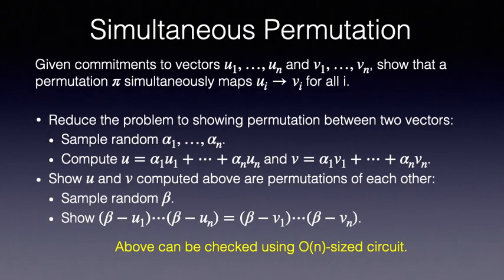Let us state the simultaneous permutation problem. Given the commitments to vectors u1 to um and v1 to vm, we want to show that there is a permutation pi that maps ui to vi for all i. We will accomplish this in two steps. First, we reduce the problem to showing that two vectors u and v are permutations of each other. Then we can probabilistically check that the product of the terms beta minus u1, beta minus u2 till beta minus uN equals the product of beta minus v1, beta minus v2 till beta minus vN for a randomly chosen beta.